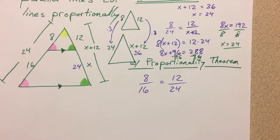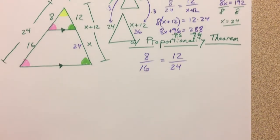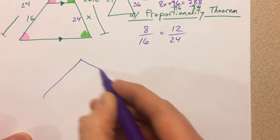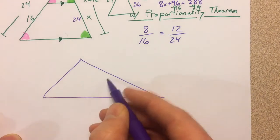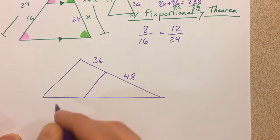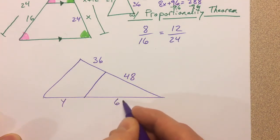That's the triangle proportionality theorem. Now to see it in context real quick, we could look at if this is 36 and this is 48 and this is y and this is 60.